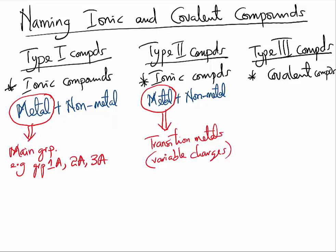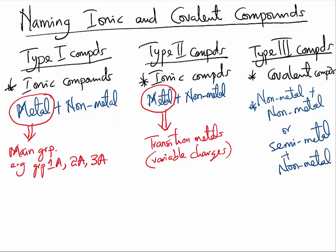So you don't really know exactly what charge they have until you have actually calculated the charge. For Type 3 compounds, we know covalent compounds are formed when non-metals combine with other non-metals. It is very essential that you know these 3 types of compounds.